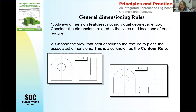General dimensioning rules: we always want to dimension features, not individual geometry. Looking at this shape, we could dimension between these two lines, but that doesn't clearly talk about a feature of the object. If we dimension off the side view, we can see the object is 0.75 inches — this is an example of good versus poor dimensioning. We always want to dimension the feature — the thickness of the object — as opposed to the distance between two lines. Similarly, we'd want to dimension the location of the center point of a circle, and choose the best view that describes the feature.